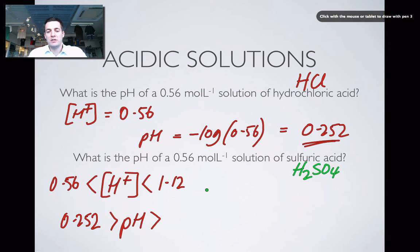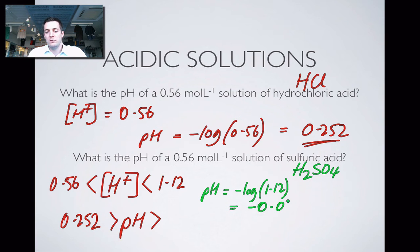So let's just calculate the pH if we did have this. It would be minus log of 1.12, and that would equal minus 0.0492. So in other words my pH here will be in the range of between 0.252 and minus 0.0492. But I don't know where in that range it's going to be, and if I'm doing WACE chemistry I don't need to say where in that range it is. I just need to appreciate that it is somewhere in that range.